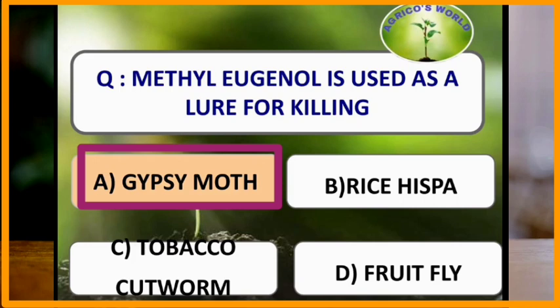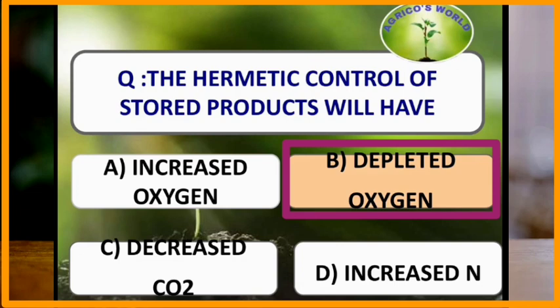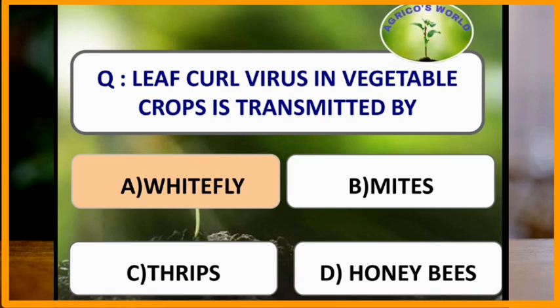The hermetic control of stored products will have depleted oxygen. Leaf curl virus in vegetable crops is transmitted by whiteflies.